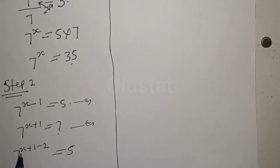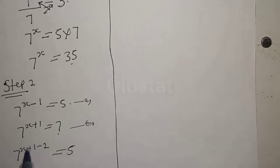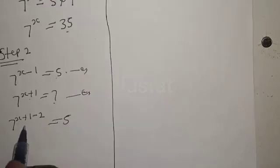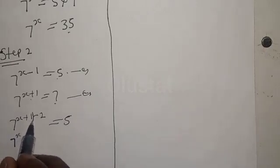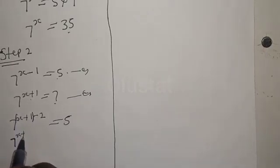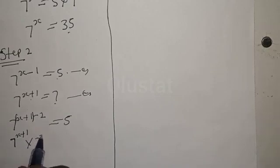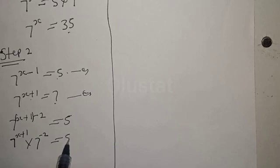This is the same as 7 raised to power x plus 1 minus 2, and 1 minus 2 gives negative 1, so we have 7 raised to power x plus 1 minus 2, which is equal to 5. This can be rewritten as 7 raised to power x plus 1 multiplied by 7 raised to power minus 2 is equal to 5.